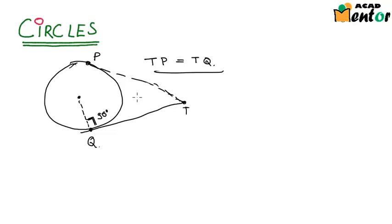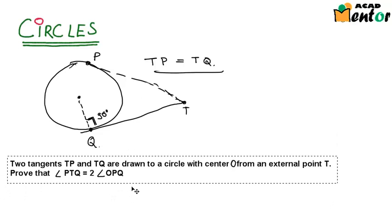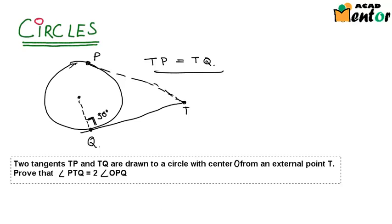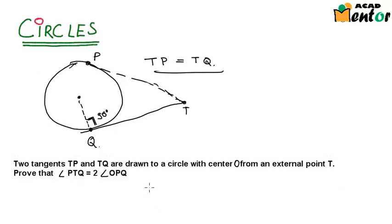So let us build on from there and look at a few example questions. Let us say this is the first example. It states that two tangents TP and TQ are drawn to a circle with center O from an external point T. Prove that angle PTQ is equal to twice of angle OPQ.